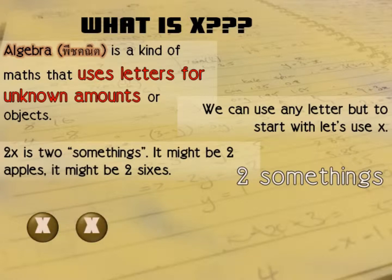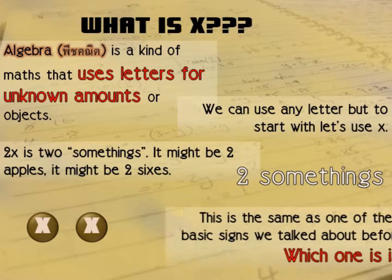2X is two somethings, might be two apples, might be two sixes, two bananas, two people, but two of the same thing. There you have two brown balls with X on it, those are 2X.